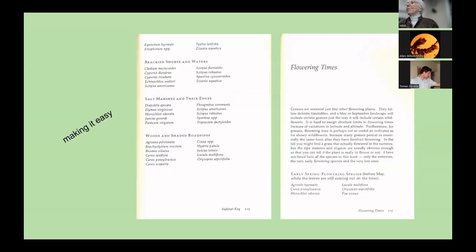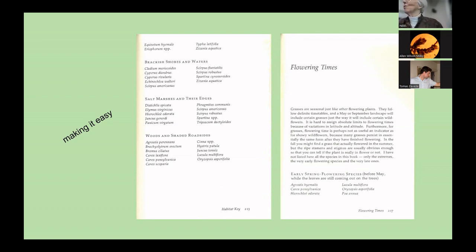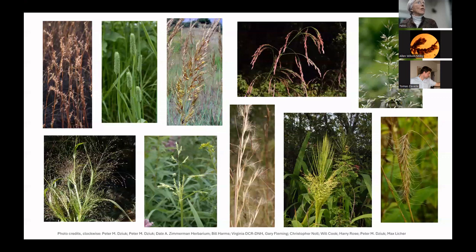I really wanted to make it easy. I put in a section in the back grouping plants by habitat — for example, 'salt marshes and their edges.' If you're standing on the edge of a salt marsh and too lazy to use even a simple key, you go through that list and find a match. I had a similar section for flowering times. At the bottom is 'early spring flowering,' which we are in now. So on April 5th, if you're in the woods and see grass-like green shoots with a little purple-black spike on top, you look through those choices and find it's Carex pennsylvanica.